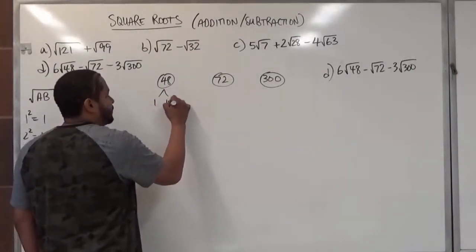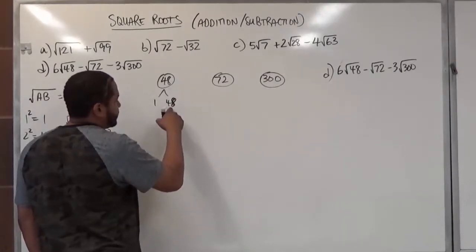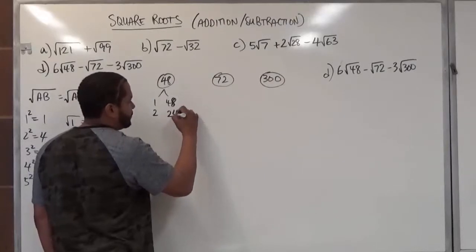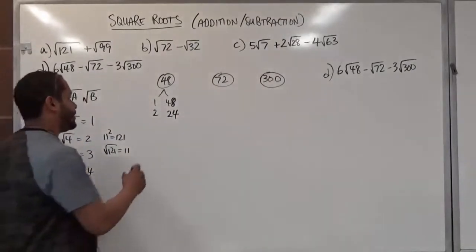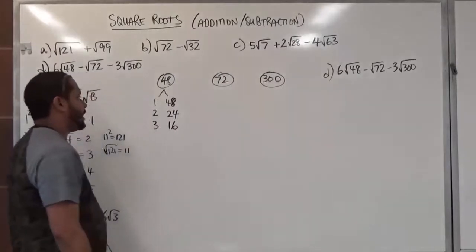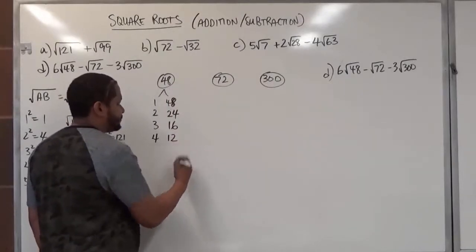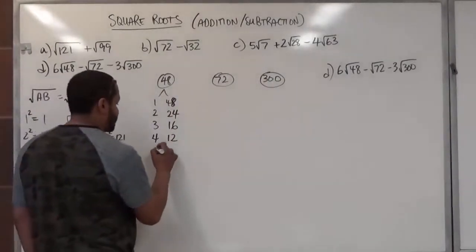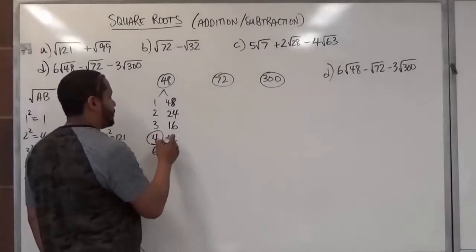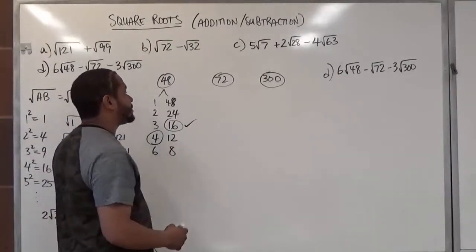Starting with 48 and using a systematic approach to list its factors: 1 and 48, 2 and 24, 3 and 16, 4 and 12, 6 and 8. The perfect squares among the factors are 4 and 16. The largest is 16, so we take the third line: the square root of 48 breaks down to the square root of 16 times the square root of 3.